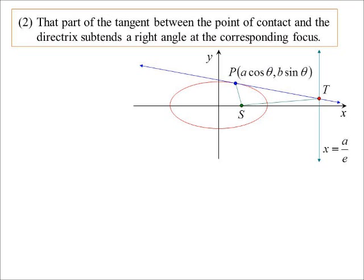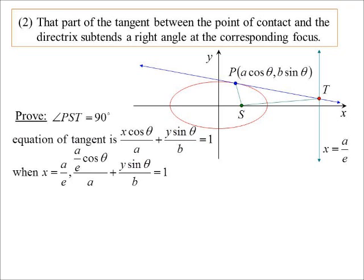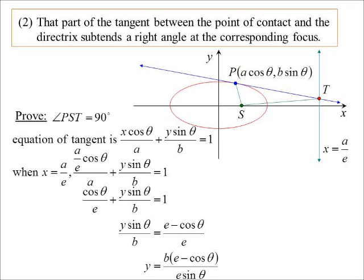And so what we're saying is PST should be 90 degrees at the corresponding focus. Remember, each directrix has a corresponding focus. So we're talking about the one closest to it. Okay, let's prove it. We want to prove that angle PST is 90 degrees. We know the equation of the tangent, or we can find it anyway. So let's find the coordinates for T. We know that's when x is a on e. Sub that in, and making y the subject, a little bit of work to do there. I've ended up with this expression, b outside of e minus cos theta all over e sin theta.